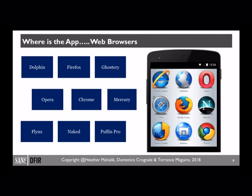Another challenge is: where is the app? It is possible — I'll use Facebook and Dropbox as examples — that users access these services through the smartphone's web browser. So you may not even see an application on the phone that relates to those services, but the user is accessing them through a web browser. If you don't do full web browser forensics on the device, you're going to miss that information. And we'll certainly go over that during the course.